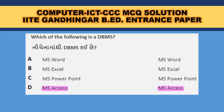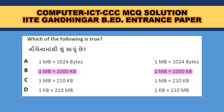MS Word is a document word processor, MS Excel is a mathematical program, and MS PowerPoint is a presentation program. Which of the following is true? 1 MB is equal to 1024 KB, so there should be 1024 — B is the nearest answer, so B is the correct answer.